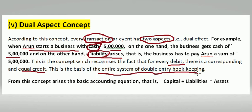This is the basis of the entire system of double entry bookkeeping. The dual aspect is why we use double entry bookkeeping. This is the accounting equation: Capital plus Liabilities is equal to Assets.